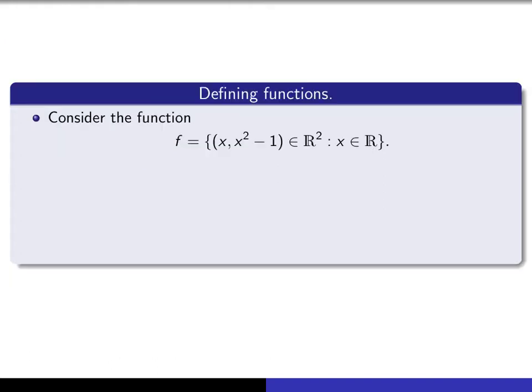I want to give you some notation that we can use when we want to specify particular functions. So let's consider this, so this is a very formal definition. It's a collection of ordered pairs, and it really does represent a function. It's the set of all ordered pairs of the form (x, x squared minus 1) in R2, such that x is an element of R.